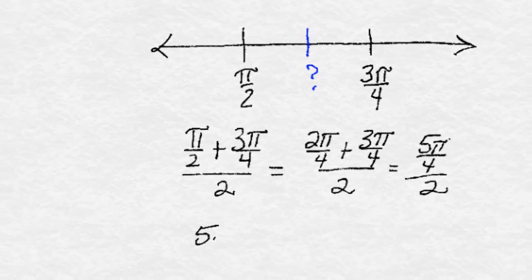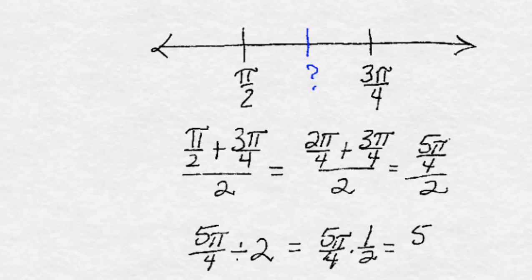But to divide 5 pi over 4 by 2 is the same as multiplying by 1 half. This gives us 5 pi over 8.